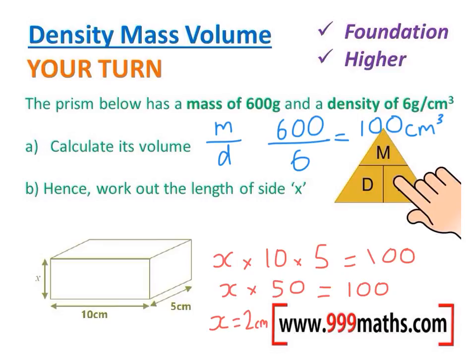We can check that works: 2 times 10 is 20, times by 5 makes 100. We know that we've got our answer.